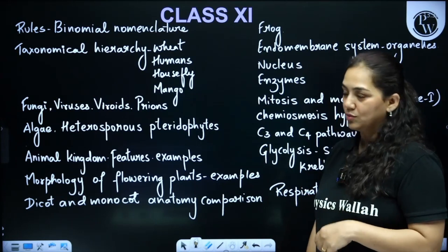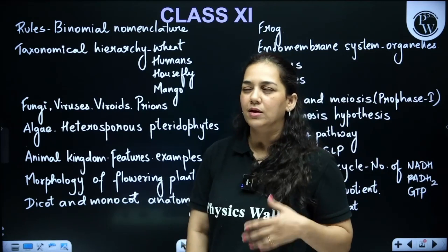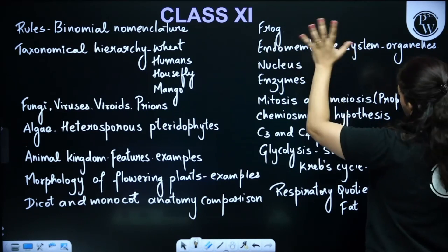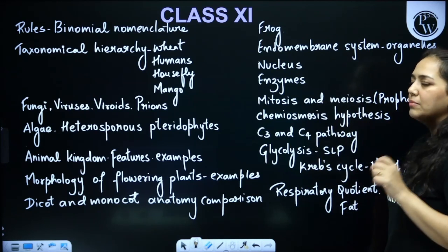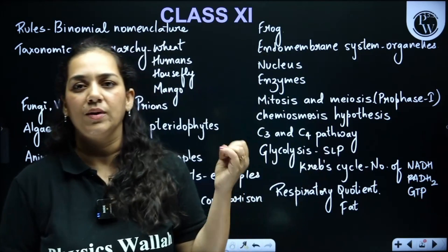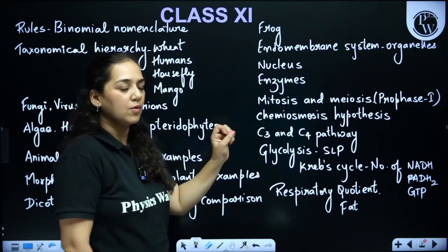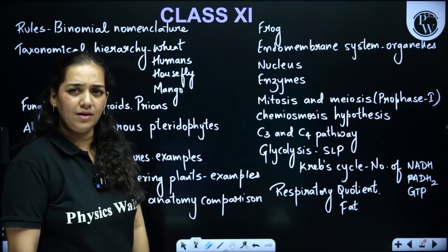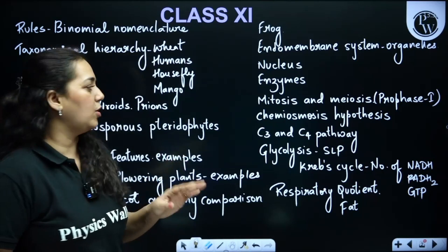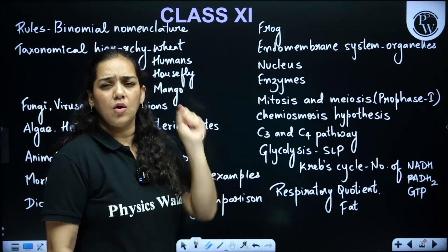The weightage for Anatomy of Flowering Plants in NEET is less — you can expect about one question, and some years none at all. Then we have the structure of the frog, which is entirely important. In the Cell chapter, the endomembrane system — ER, Golgi apparatus, lysosome, and vacuole — and the structure of the nucleus are important. In Biomolecules, enzymes — their nature and characteristic features — are important.